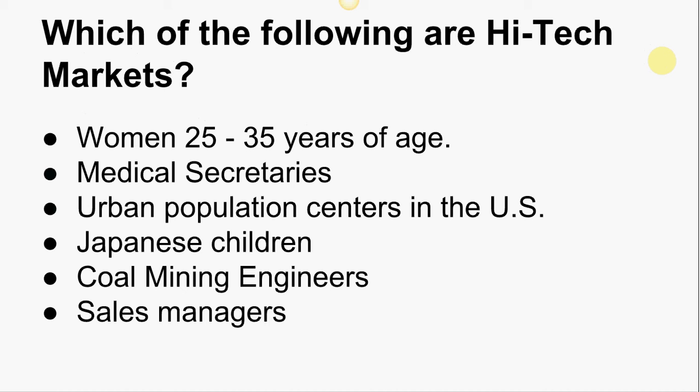But something like Japanese children or the urban population in the United States would not be a market for high tech — it's not a high-tech market because it's too diverse. Many Japanese children might be really good at mathematics, others might be good in English, and some are great in literature. There's no one thing that draws them together for a high-tech market.